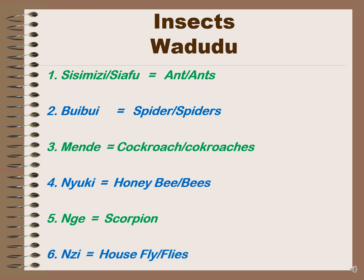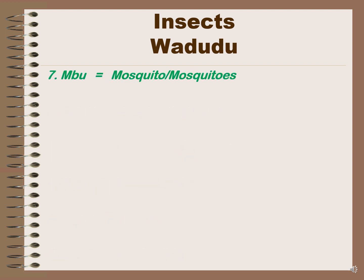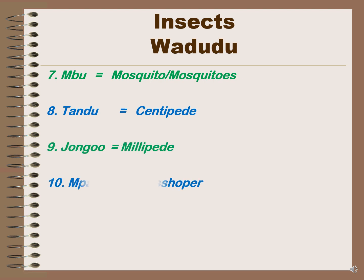'Nzi' is housefly or houseflies. 'Umbu' is mosquito or mosquitoes. 'Tandu' is centipede. 'Diongo' is millipede. 'Mpanzi' is grasshopper.